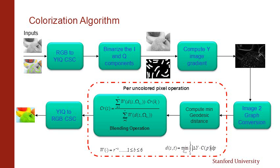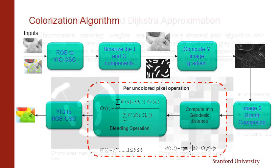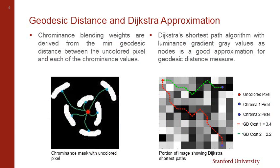The most compute-intensive task in this algorithm is computing the geodesic distance and doing the blending operation, which is done per uncolored pixel. Almost 90% of the time is spent in these two operations. To calculate geodesic distance, we make use of Dijkstra's shortest path algorithm, run on the luminance gradient values as nodes, which is a very good approximation for the geodesic distance measure.